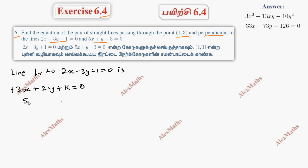Substitute the point (1,3). Passing through the point (1,3), we get 3 plus 6 plus k equals 0, so k equals minus 9. Substituting k equals minus 9, we get 3x plus 2y minus 9 equals 0.